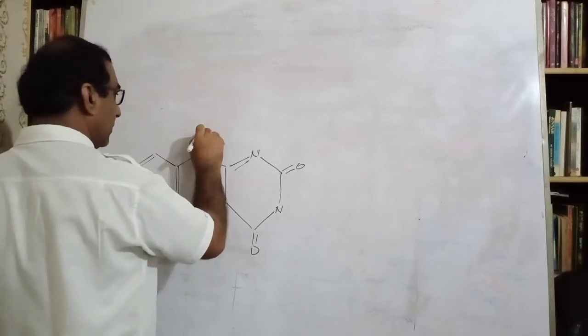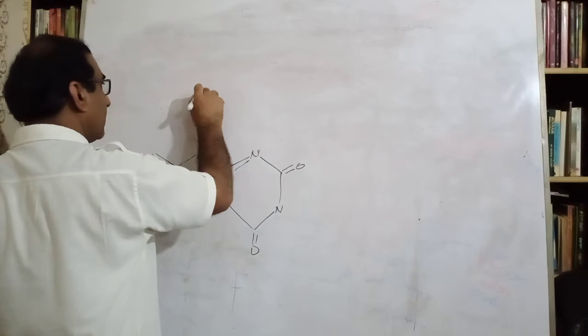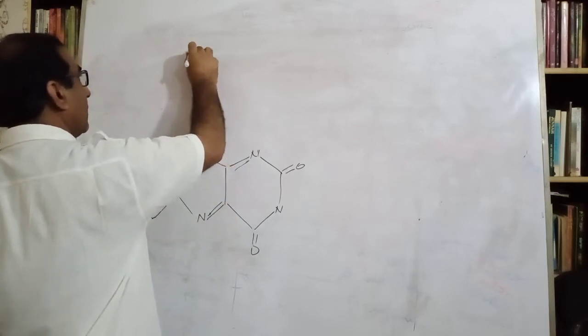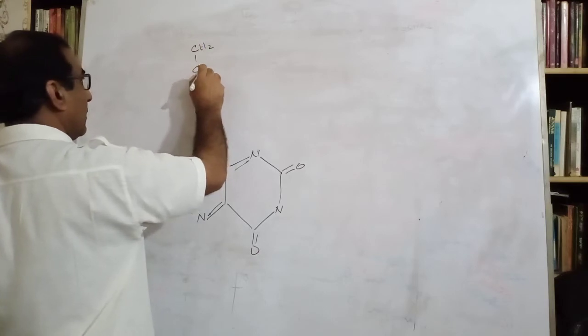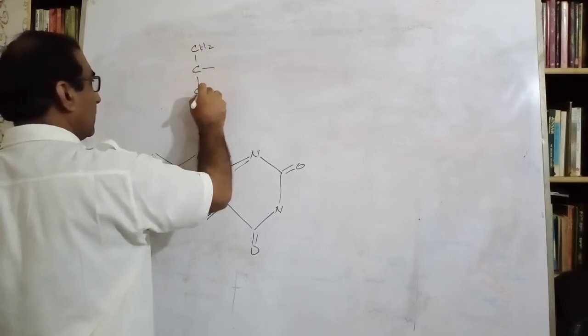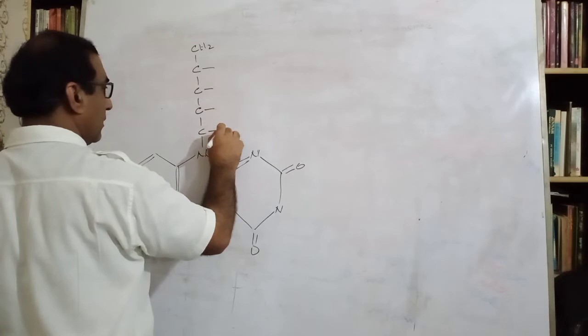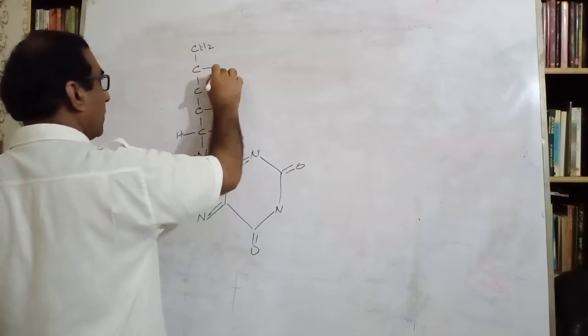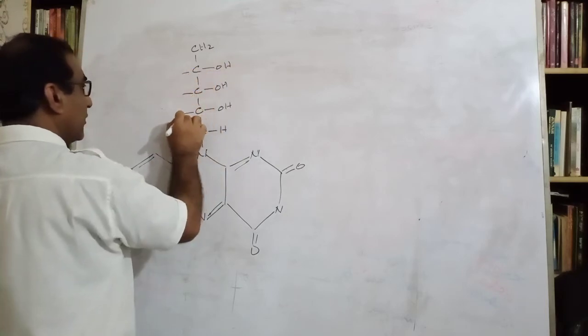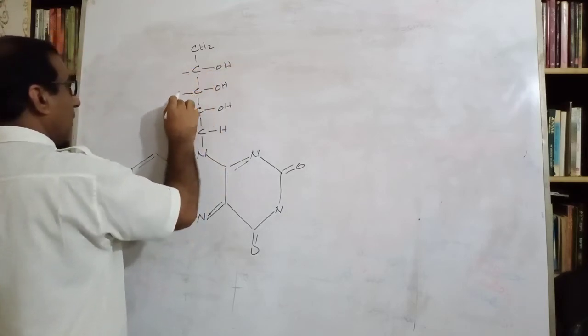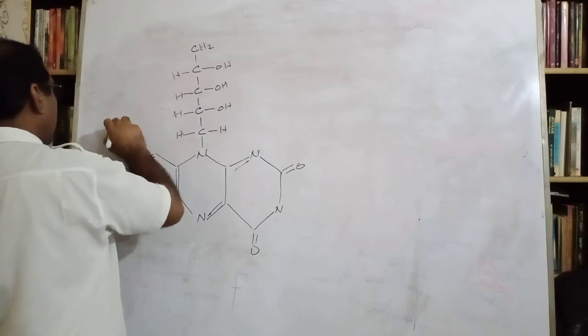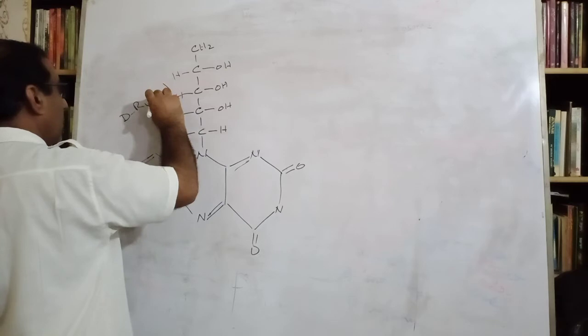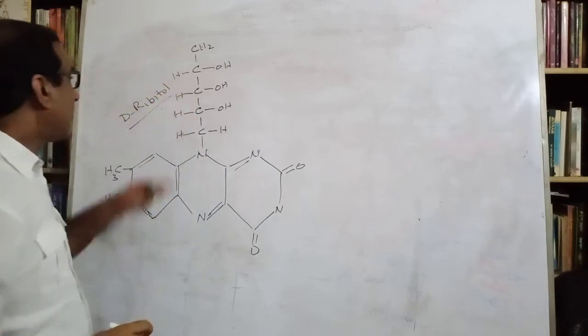Here is what, five carbon: one, two, three, four, five. Five carbon pentose sugar. Its name, you might have studied in the structure of carbohydrates, its name is D-ribitol.